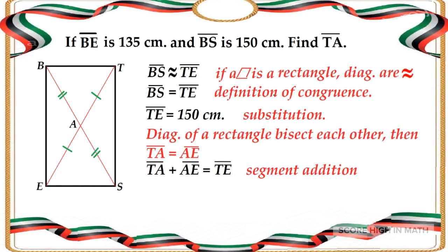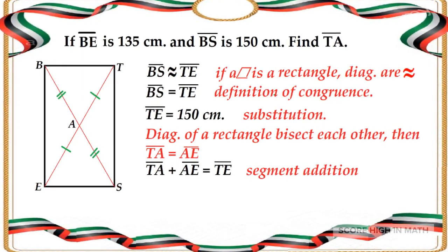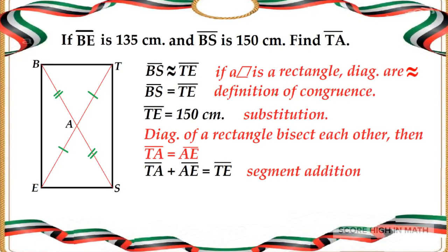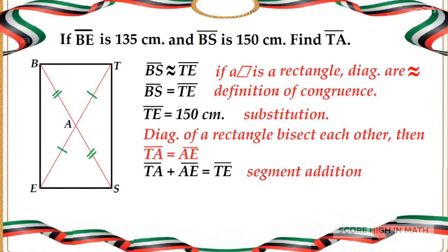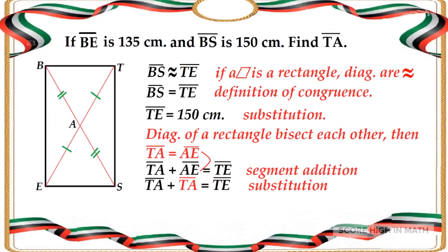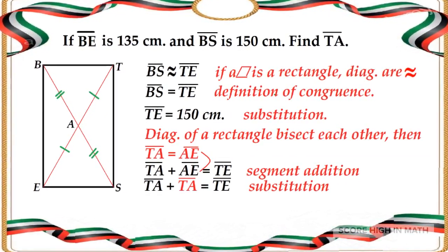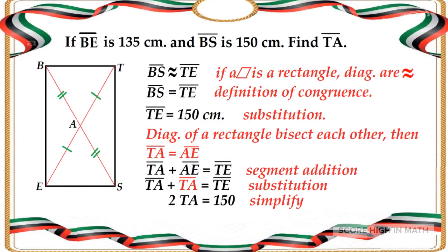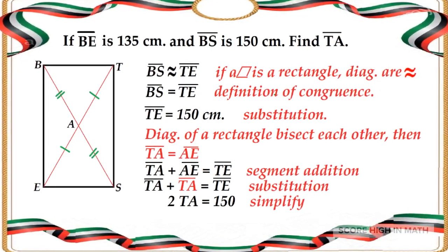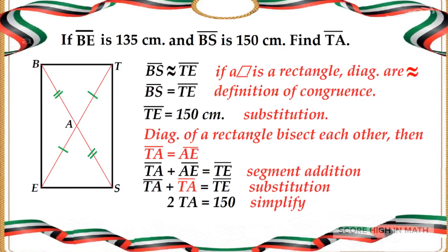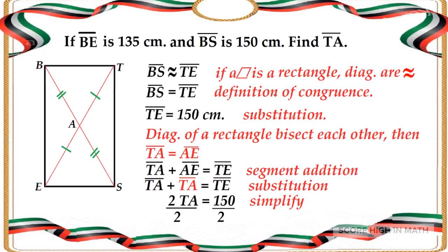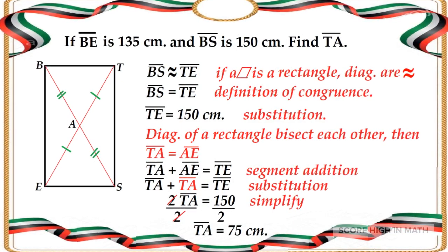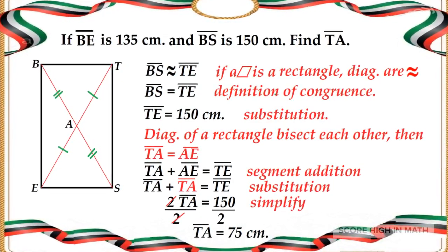Since line segment TE is already given, which is 150 cm, therefore by segment addition, TA plus AE is equal to TE. We can substitute TA for AE because they are equal, so TA plus TA is equal to TE. To simplify, 2TA is equal to 150. To solve for TA, we divide both sides by 2, and we get TA is equal to 75 cm.